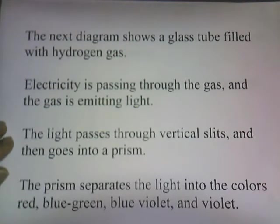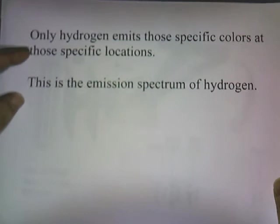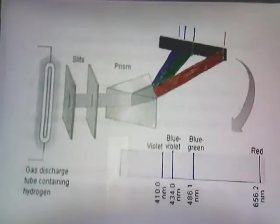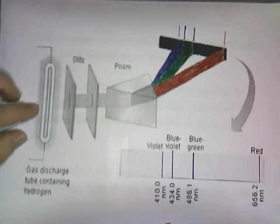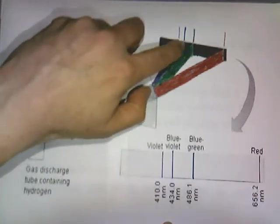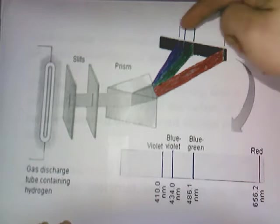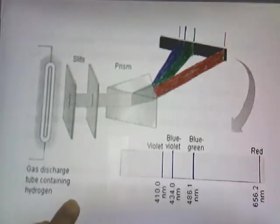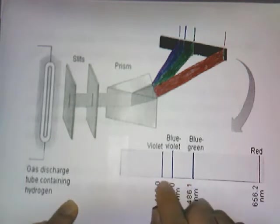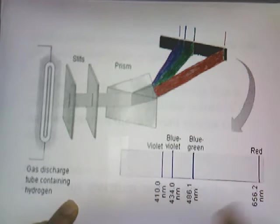Electricity is passing through the hydrogen gas. Hydrogen gas gives off light, and then the prism separates the light into different colors. Only hydrogen atoms are going to emit specific colors at specific locations — this is what we call the emission spectrum of hydrogen. Here's hydrogen gas; electricity is going through it, producing light. The light passes through slits and then through the prism, which separates the colors. You see this shade of red at a particular location, blue-green at this location, blue-violet there, and violet there. This pattern of colors is the emission spectrum of hydrogen.